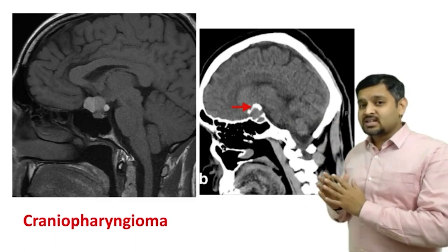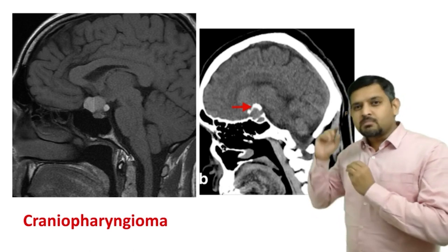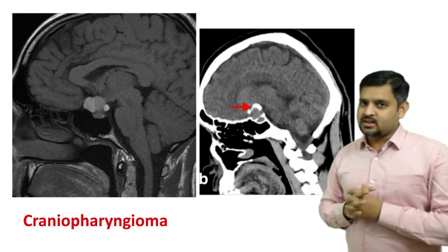If you see a mass which is predominantly suprasellar, think of craniopharyngioma, which is much better seen on a CT scan where you can appreciate the calcification in the mass.